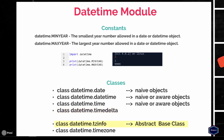The tzinfo is an abstract base class, meaning that this class can represent simple time zones with fixed offset from UTC. So if you want to create an aware datetime or time object, the optional tzinfo attribute of these classes must be set to an instance of a subclass of tzinfo class, and that can be the timezone class.